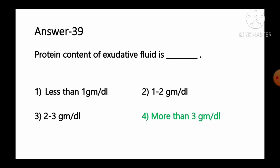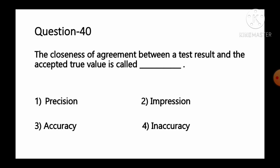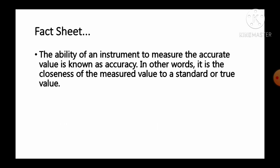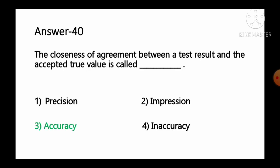Question number 40: The closeness of agreement between a test result and the accepted true value is called — option 1 precision, option 2 imprecision, option 3 accuracy, option 4 inaccuracy. The ability of an instrument to measure the accurate value is known as accuracy — in other words, the closeness of the measured value to the standard or true value. So option number 3, accuracy, is the correct answer.